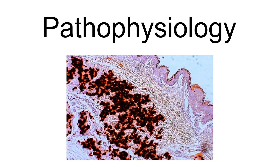In PXE, there is mineralization — accumulation of calcium and other minerals — and fragmentation of the elastin-containing fibers in connective tissue, but primarily in the mid-laminar layer of the dermis, Bruch's membrane, and the mid-sized arteries. Recent studies have confirmed that PXE is a metabolic disease and that its features arise because metabolites of vitamin K cannot reach peripheral tissues. Low levels of PPi cause mineralization in peripheral tissues.